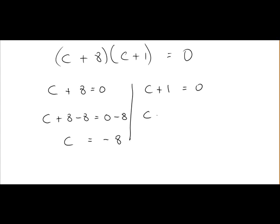c plus 1 on this side, we'll take 1 from both sides so that we get c on its own. Plus 1 minus 1 is 0, so we are just left with c on this side. 0 minus 1 is equal to minus 1. So here what we have done is we have found that c is equal to minus 8 or c is equal to minus 1. And that is our quadratic equation solved.